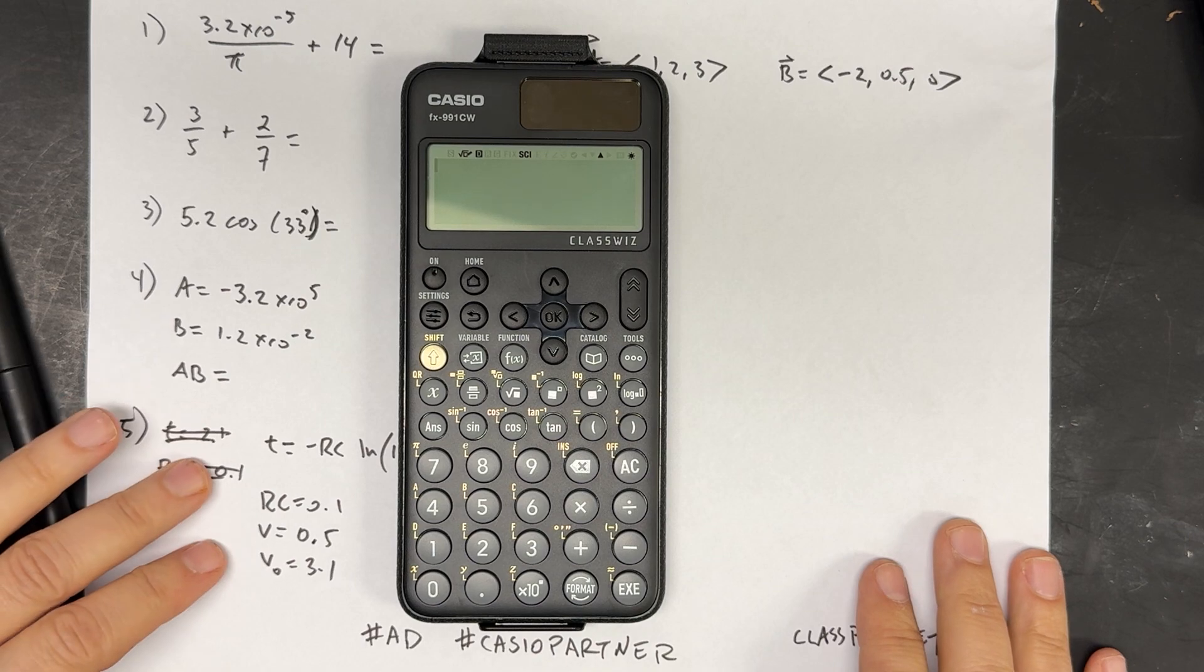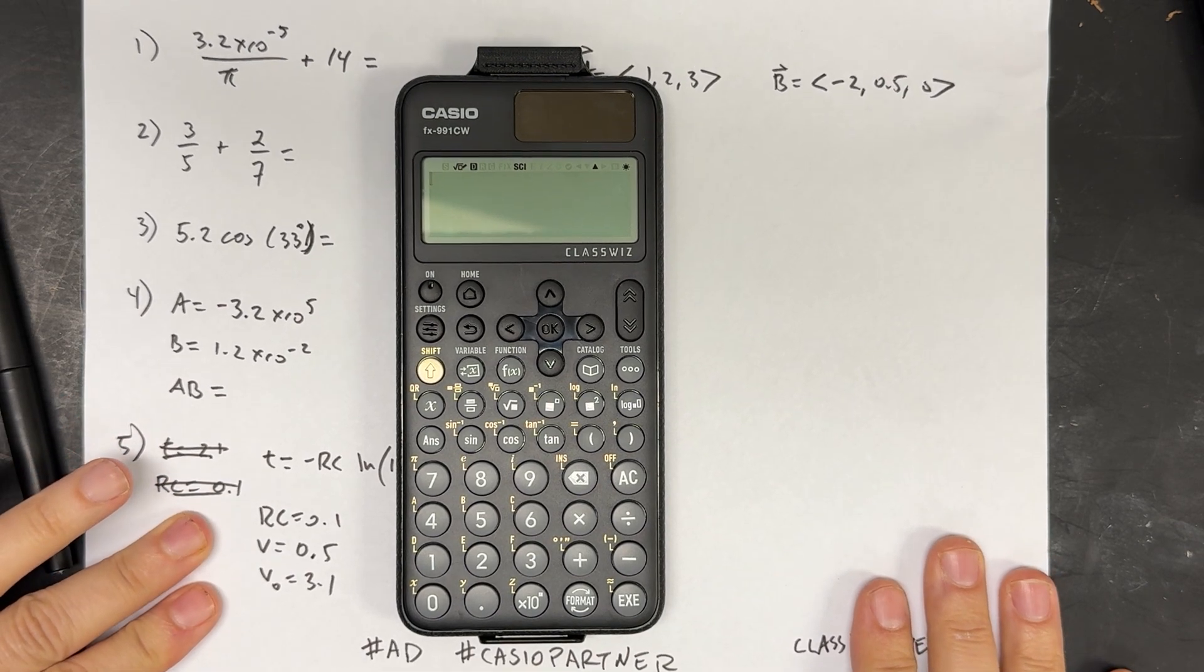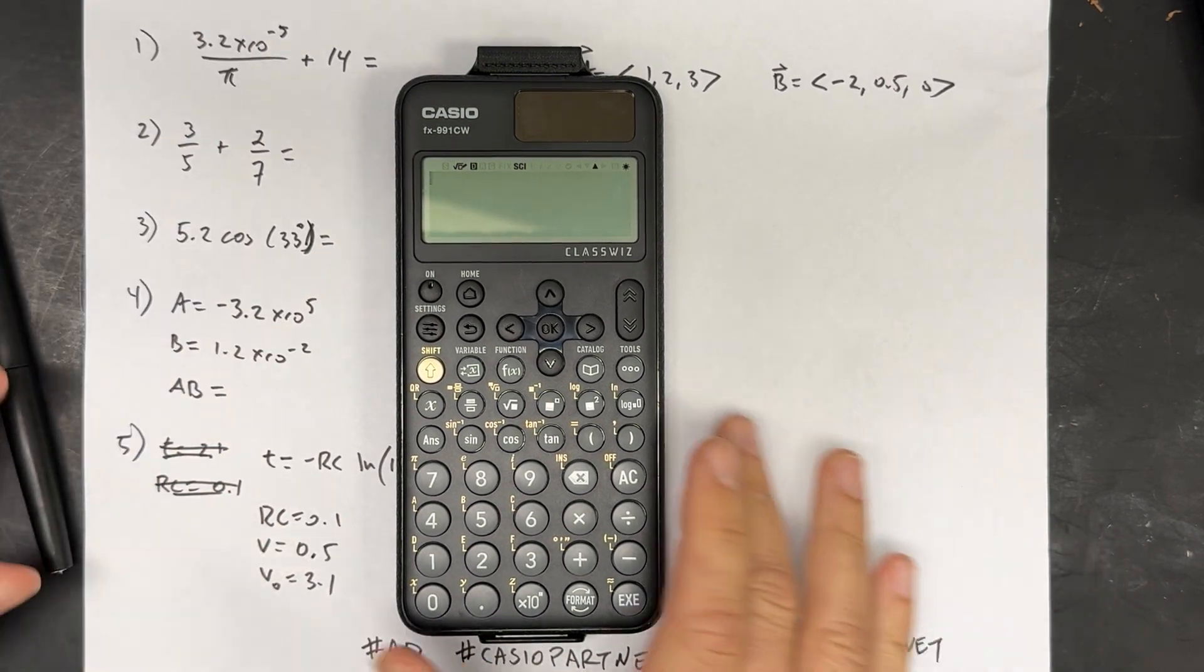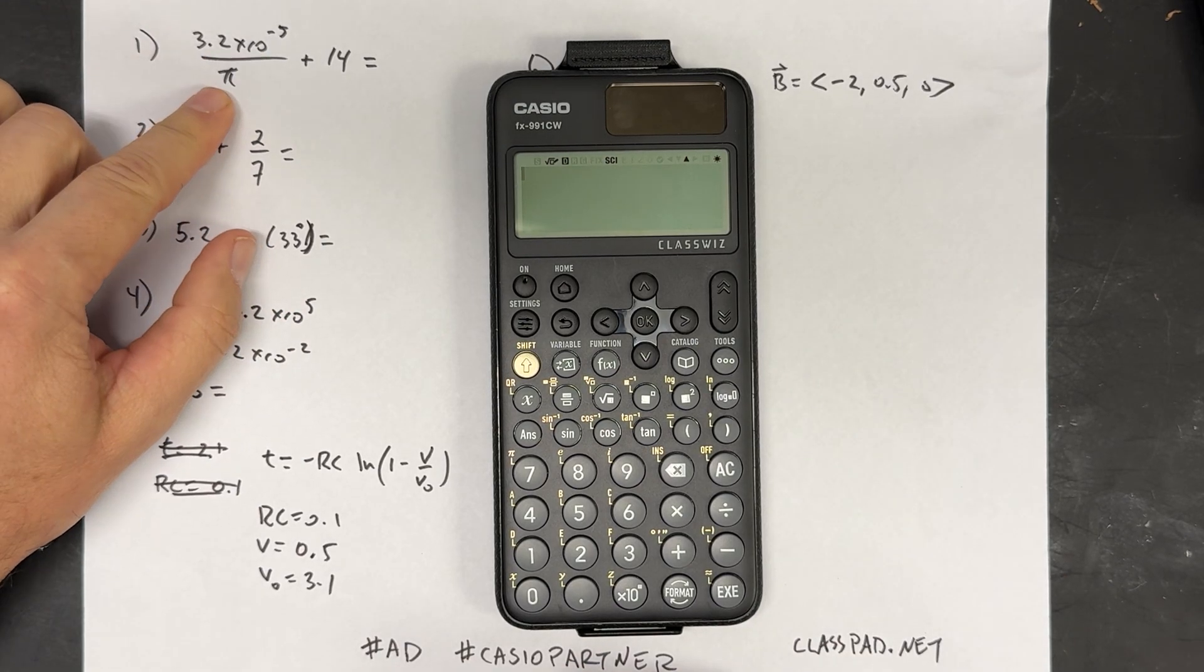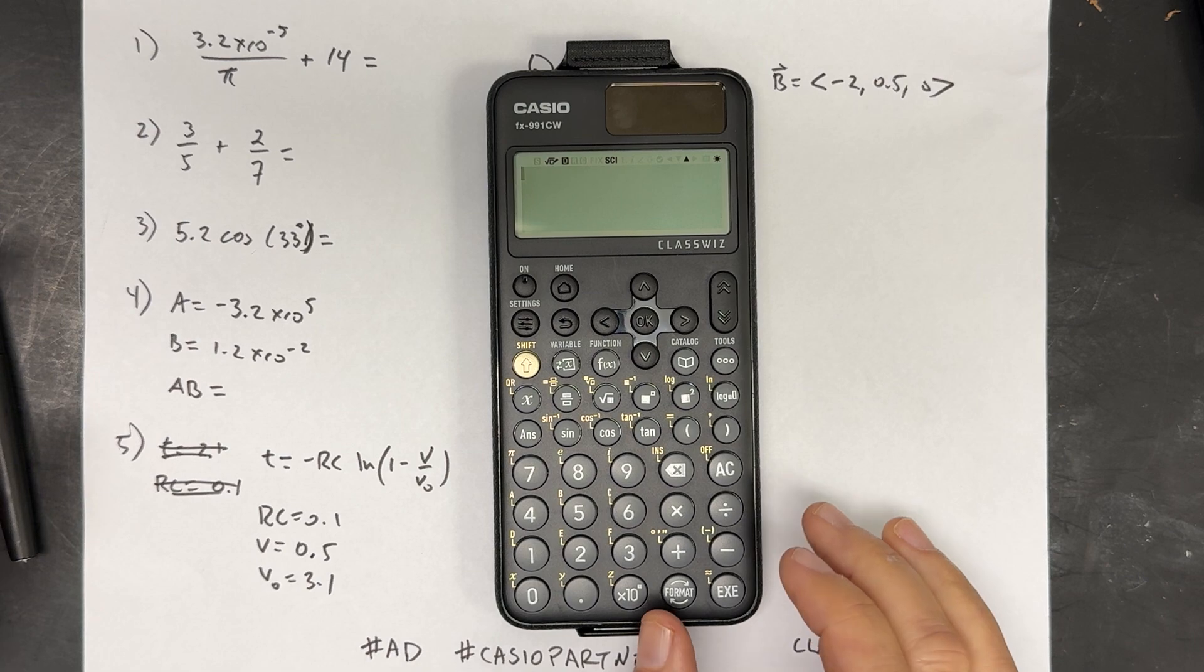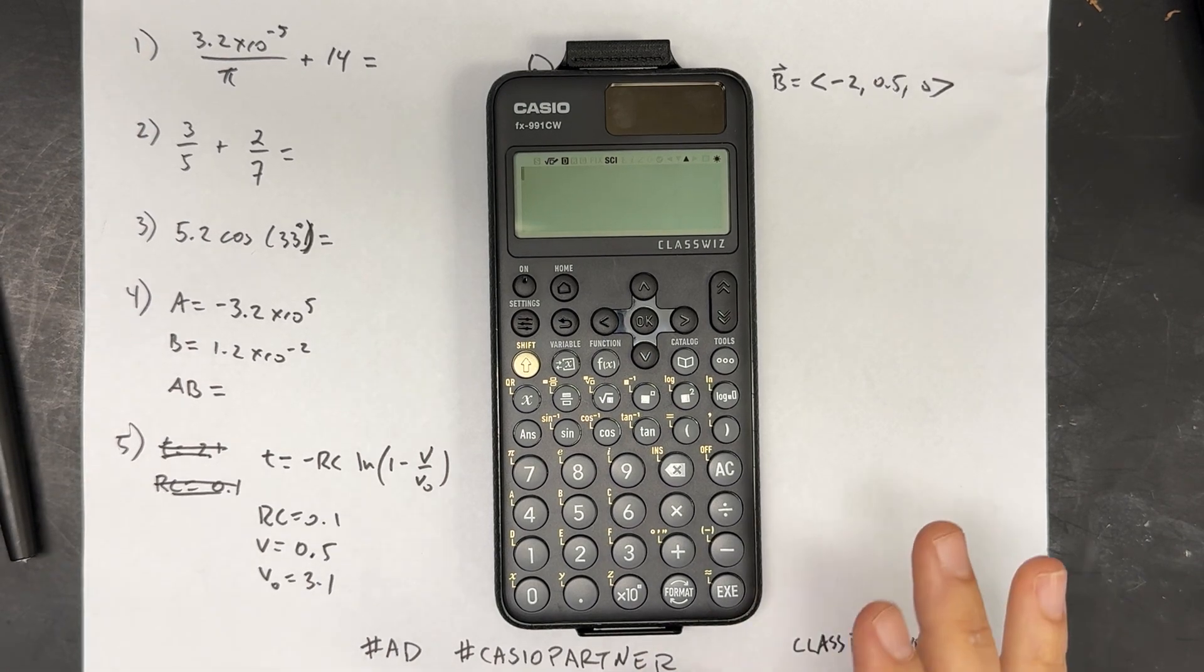As we do things, we can learn how to use the calculator by just calculating all these values. So I came up with this expression right here: 3.2 times 10 to the negative 5th over pi plus 14. I don't know what it means, it doesn't matter. Let's just calculate what that is.